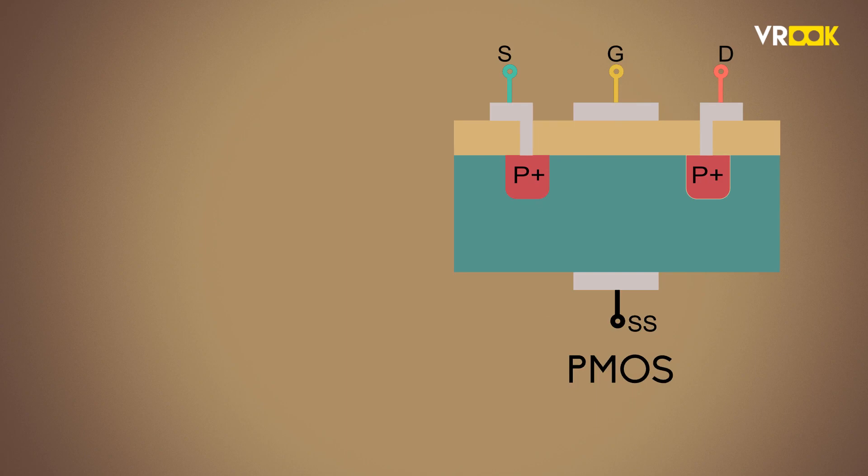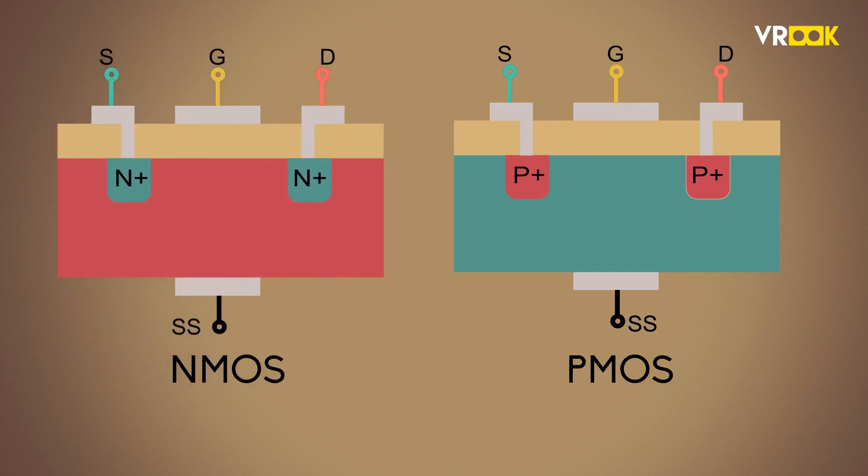CMOS consists of P-channel MOS, which is PMOS, and N-channel MOS, also called NMOS. Let us look at the structure of CMOS.